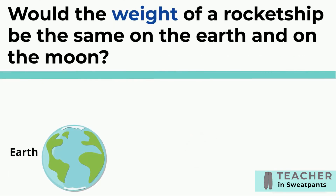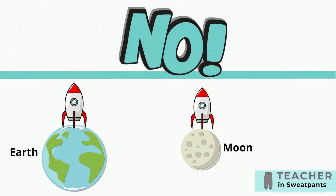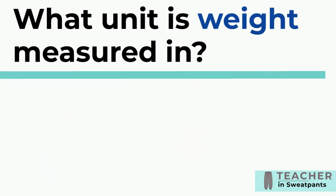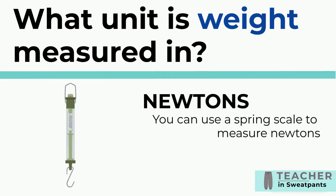Would the weight of a rocket ship be the same on the Earth and on the Moon? No — the weight would not be the same because the gravitational pull is stronger on the Earth than on the Moon. Weight is measured in newtons; you can use a spring scale to measure newtons.